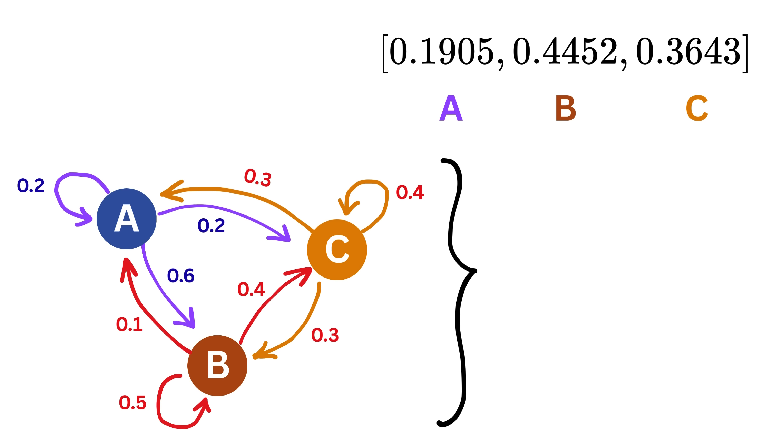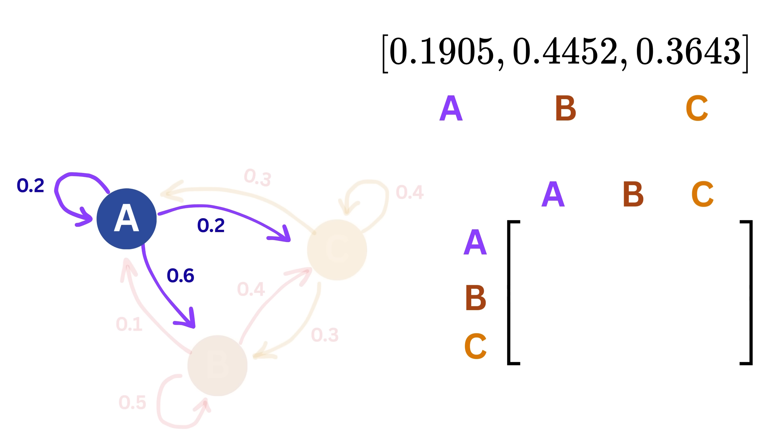We can represent the entire Markov chain using a matrix, which we call the transition matrix. In this matrix, both the rows and the columns represent the pages, and each entry shows the probability of jumping from one page to another. For example, the first row, which corresponds to transitions from page A, has values 0.2, 0.6, and 0.2.